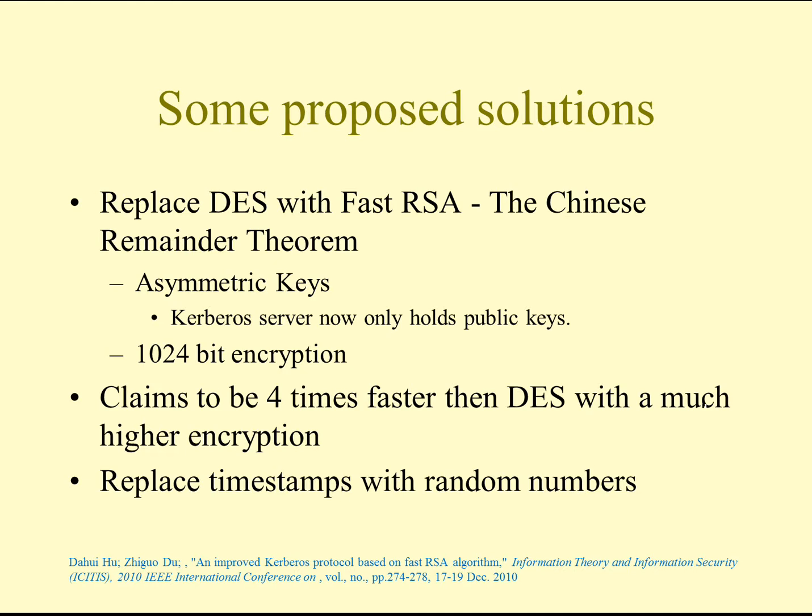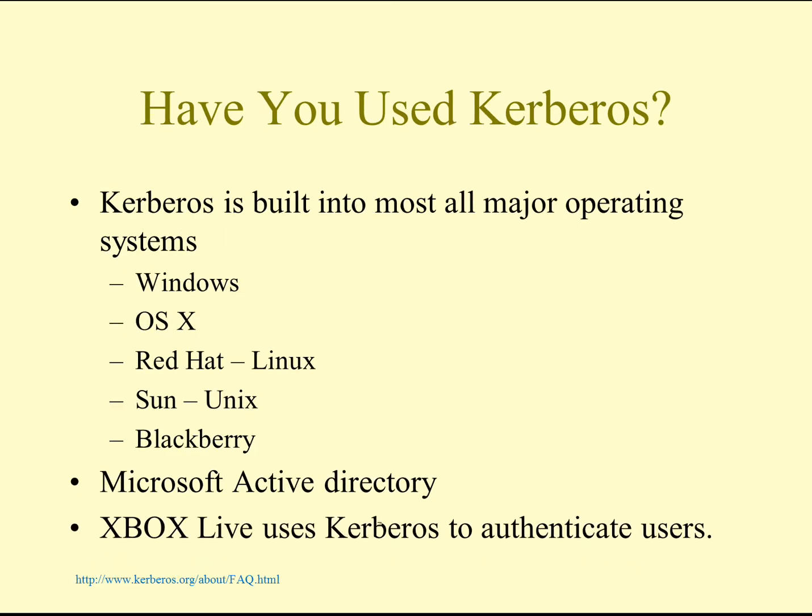Asymmetric keys would be beneficial so that the Kerberos server can hold public keys instead of symmetric private keys. We can then bump up the encryption to 1024, 2048, or 4096 bits to increase security. We can also replace timestamps with random numbers, which would help with certain attacks based on timestamps.